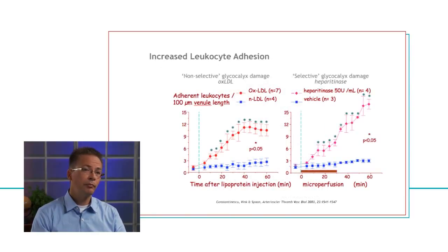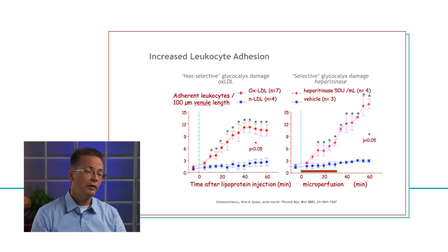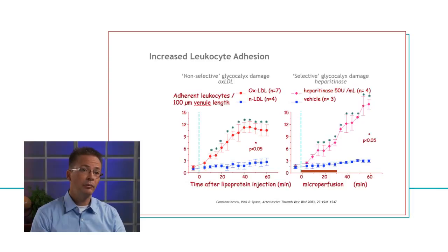When glycocalyx is damaged, two examples are shown here. On the left side, glycocalyx is damaged by exposure to oxidized LDL cholesterol, which is very toxic and plays a part in the development of atherosclerotic disease. The blue curve shows normal levels of leukocyte adhesion — very low because there's no infection and no initiation of vascular disease. The red dots demonstrate that when oxidized LDL cholesterol breaks down glycocalyx, within half an hour there's a huge increase in the number of inflammatory cells sticking to the vessel wall. On the right hand side, using specific enzymes like hyaluronidase and heparitinase to break down specific components of the glycocalyx, there is similarly a major increase in the number of adhering leukocytes and inflammatory cells.